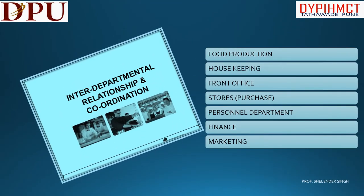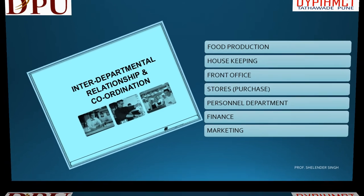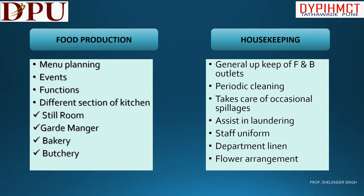Now we will talk about interdepartmental relationships with various operational departments. The following are the departments with which food and beverage service coordinates: first, Food Production; second, Housekeeping; third, Front Office; fourth, Stores; fifth, Personnel or Human Resource; sixth, Finance; seventh, Marketing. We will first discuss Food Production and Housekeeping.